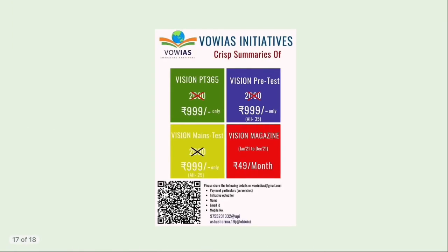That's it for today, friends. We are condensing all important materials from an examination point of view — for example, the 100-page Vision Economy has been condensed into about 50 pages for easier revision. We have done the same for the Mains series, Vision Prelims Test Series, and Vision Monthly Magazine. Visit our Telegram channel for details and sample documents on all these initiatives.